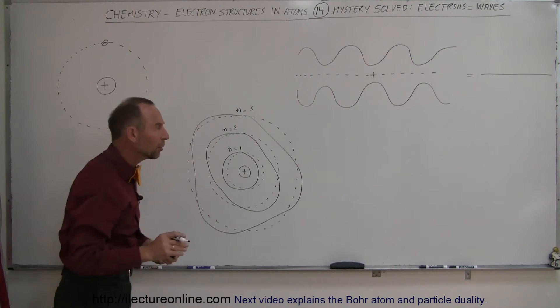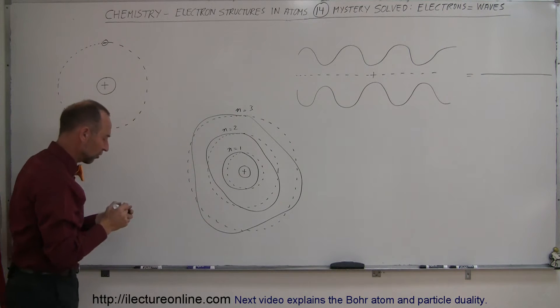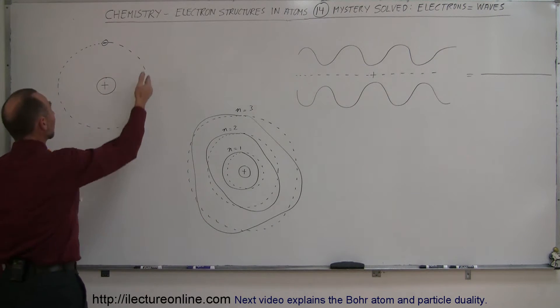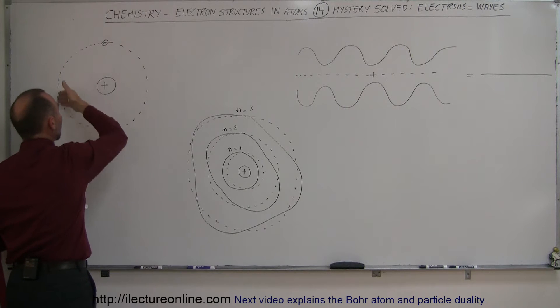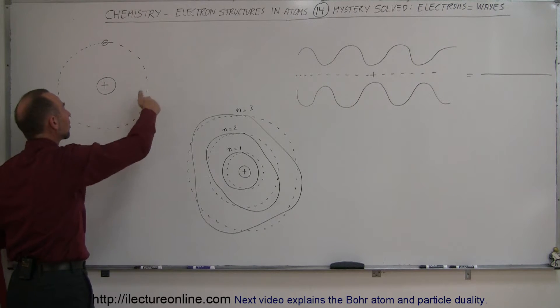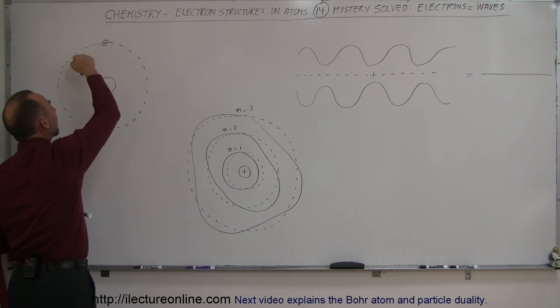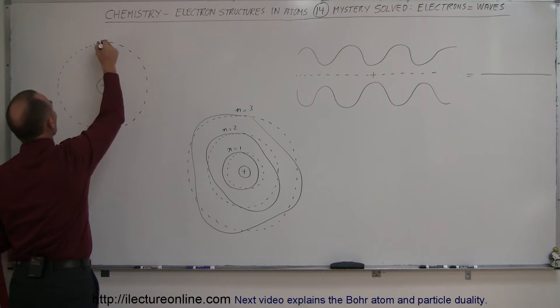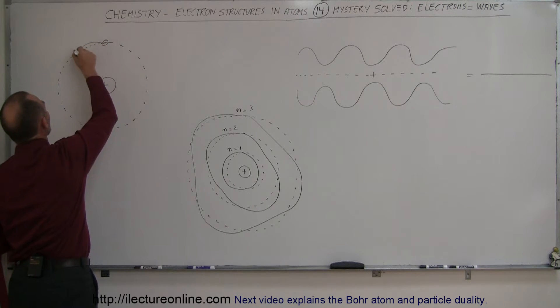Now, the same will happen with electrons. If an electron zips around the nucleus and the electron acts like a wave, that means it's going to go around the nucleus — something that looks maybe like this.